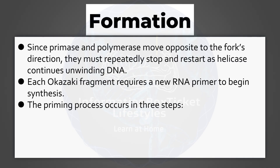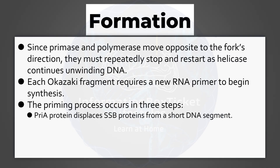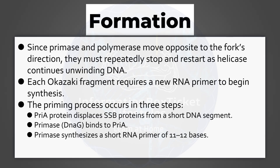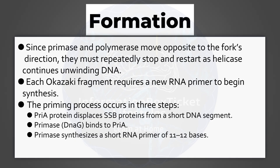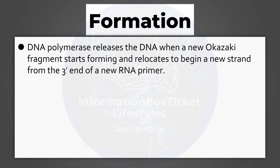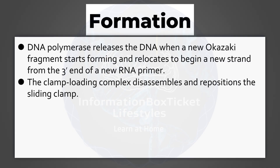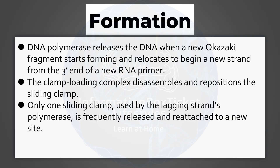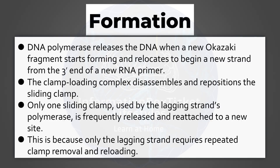The priming process occurs in three steps: PriA protein displaces SSB proteins from a short DNA segment; primase binds to PriA; primase synthesizes a short RNA primer of 11 to 12 bases. DNA polymerase releases the DNA when a new Okazaki fragment starts forming and relocates to begin a new strand from the 3' end of a new RNA primer. The clamp loading complex disassembles and repositions the sliding clamp. Only one sliding clamp, used by the lagging strand's polymerase, is frequently released and reattached to a new site, because only the lagging strand requires repeated clamp removal and reloading.